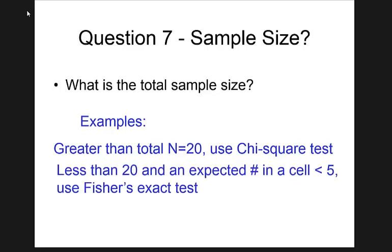Question seven: sample size. This applies mainly to the chi-square test. When you do a chi-square test with more than 20 total observations, you don't need Fisher's exact test. But when you have fewer than 20, you construct a 2×2 table — classifying patients by drug A or B, and outcome (died or didn't die). If any cell has fewer than five observations, use Fisher's exact test. If all cells have five or more, use chi-square.